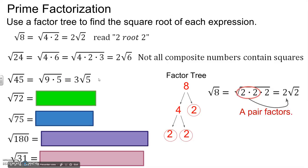45 factor down to 9 times 5. 9 is a perfect square. The square root of 9 is 3, so this becomes 3 root 5.